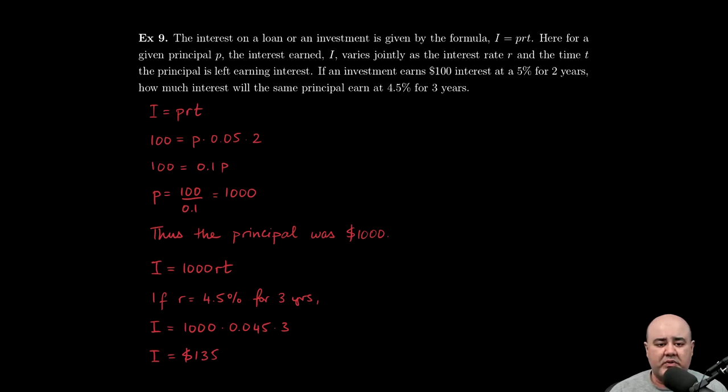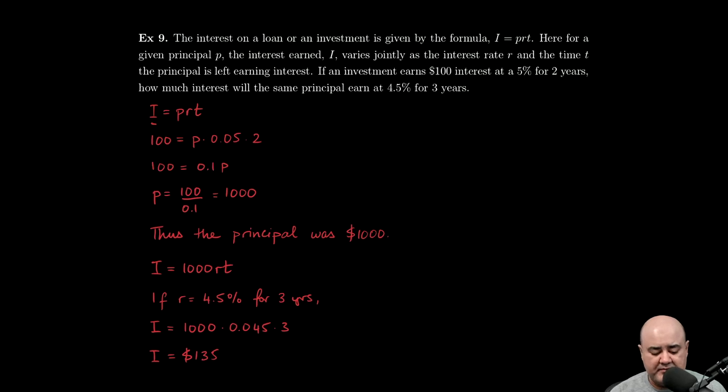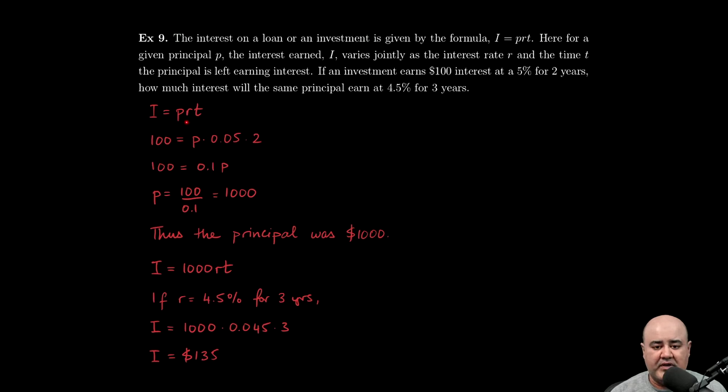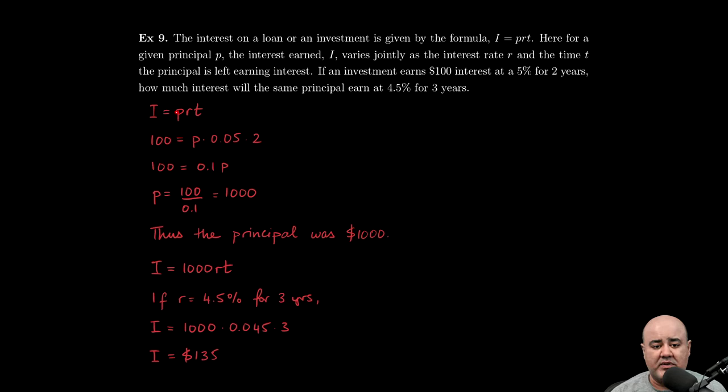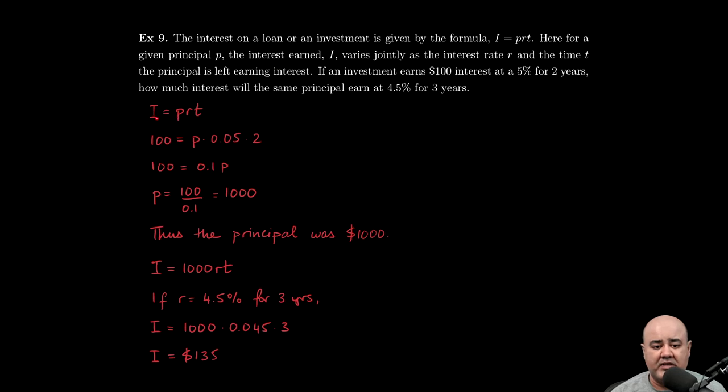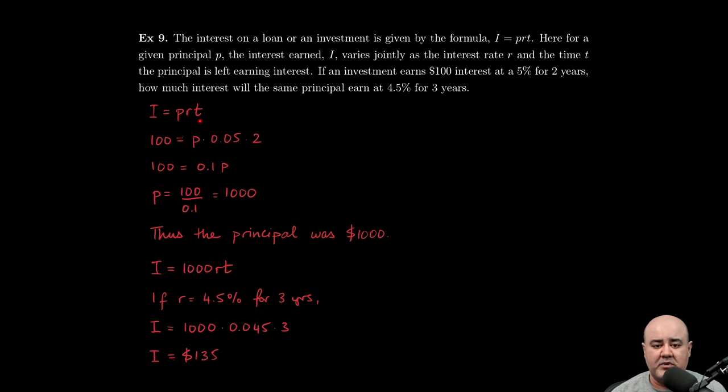So here in this question, we're told that for a given principal P, the interest earned I varies jointly as the rate of interest and the time. So we know that I varies jointly with R and T for some value of P. So if P is held constant, that's going to be a constant of variation or constant of proportionality. So as long as this number stays the same, the interest will vary jointly with the rate and the time for the investment or the loan.